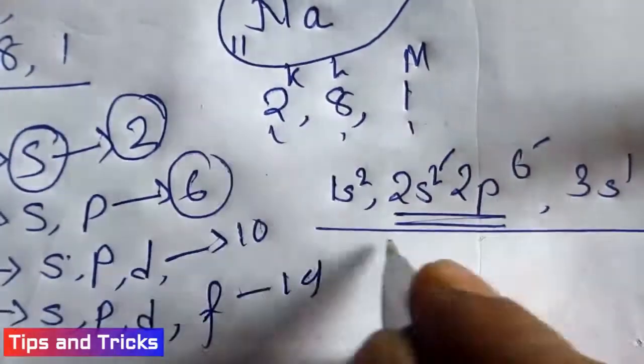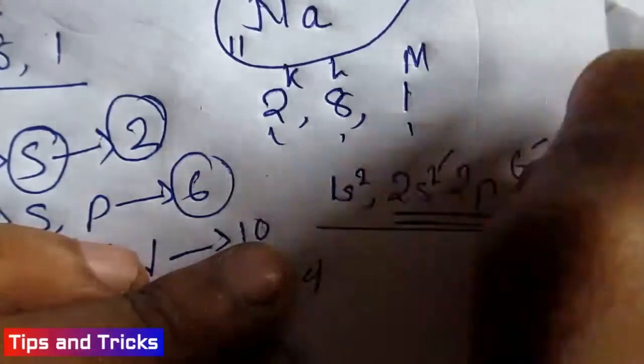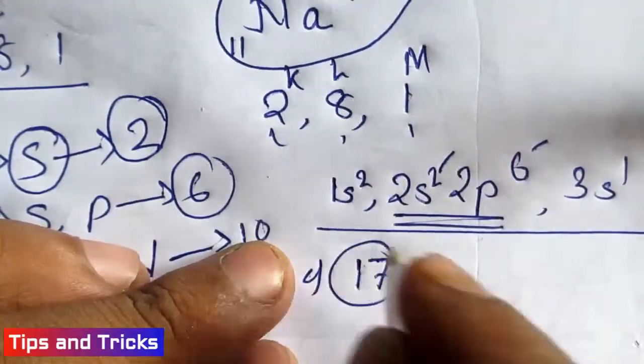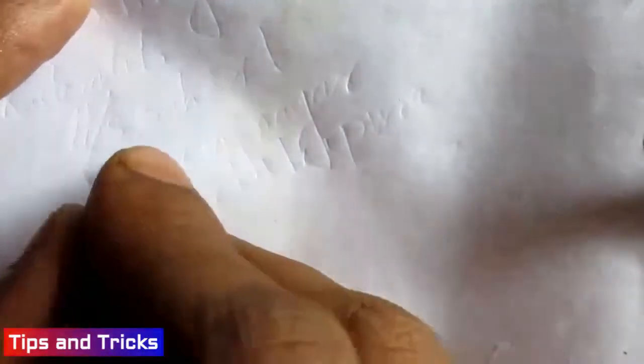And the last is 3s¹. Now take another example: Cl-35, chlorine, having 17 electrons. Electron configuration is like 2, 8, 7.